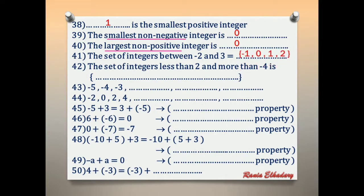Number 42: the set of integers less than 2 and more than negative 4. The integers between negative 4 and 2 are: 1, 0, negative 1, negative 2, negative 3.